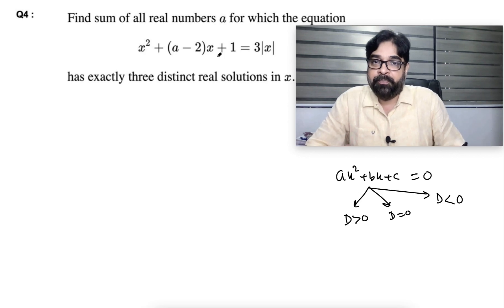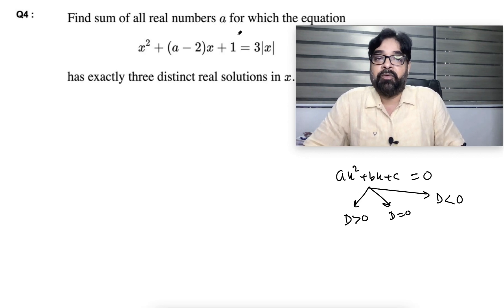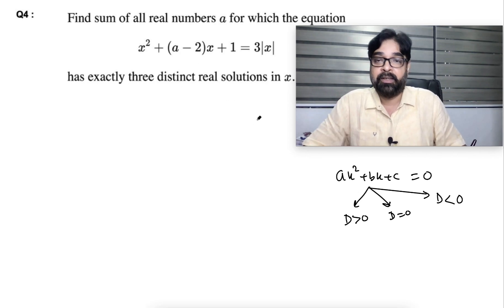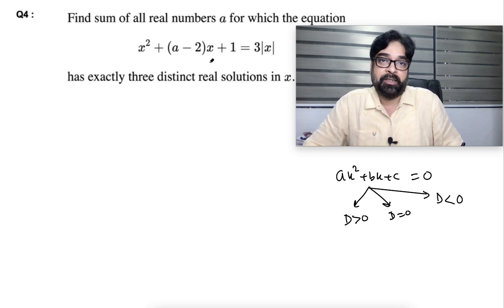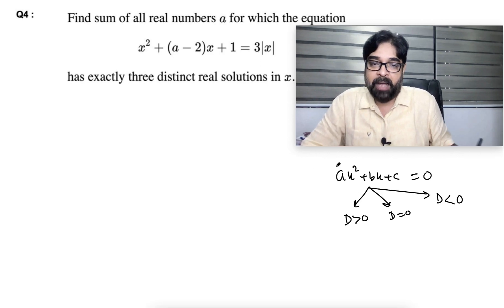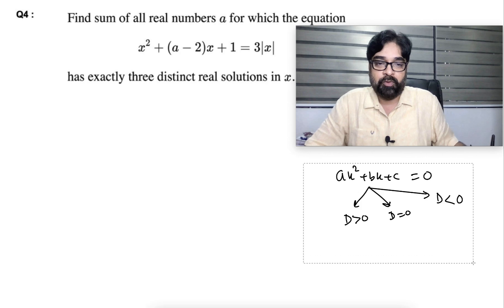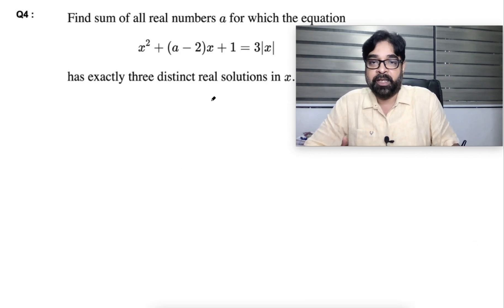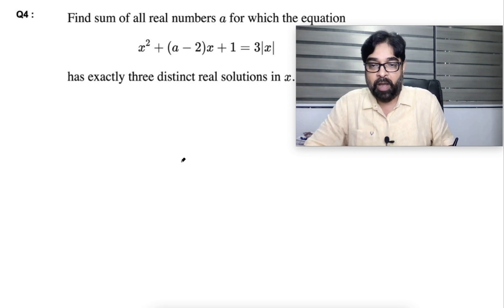Find the sum of all real values of a for which the equation has exactly three different real solutions in x. This is not a pure quadratic right now — I will convert it. I will take two cases to remove the modulus, doing them side by side. Please watch carefully — we have to find three different solutions in x.